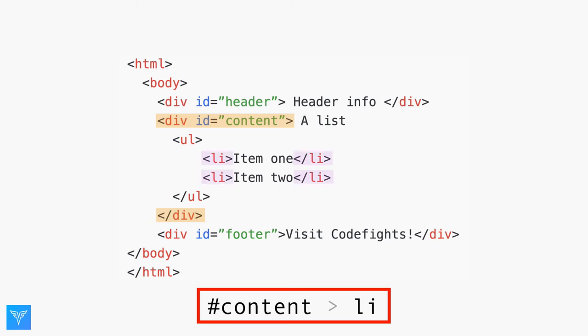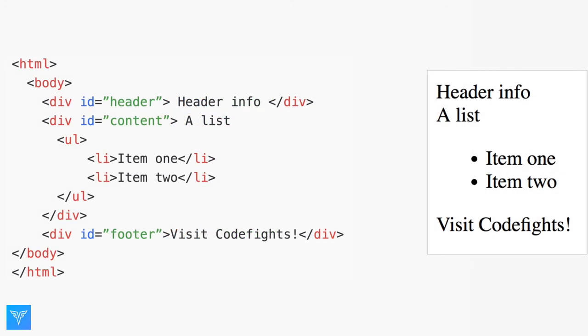But this selection selects all the list items that are descendants, that is, children of children, of content. A lot of front-end engineering is about understanding the tree model, and how to select the pieces you want to get the result you imagined.